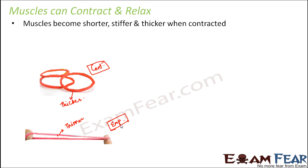The same concept applies to muscles. Muscles become shorter, stiffer, and thicker when contracted. When expanded, it becomes longer but thinner. Also, when the rubber band is very thin and stretched, it can be easily broken — in fact it sometimes snaps — but a contracted rubber band is stiffer and doesn't break as easily.